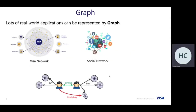Many real-world applications can be represented by a graph. For example, in our Vistar transaction networks, we have a lot of entities in the graph like customers, merchants, and acquirers, and the links represent the relationships between these nodes. For example, when a customer purchases something at Walmart, we can have a transaction edge to show the relationship between customers and merchants.